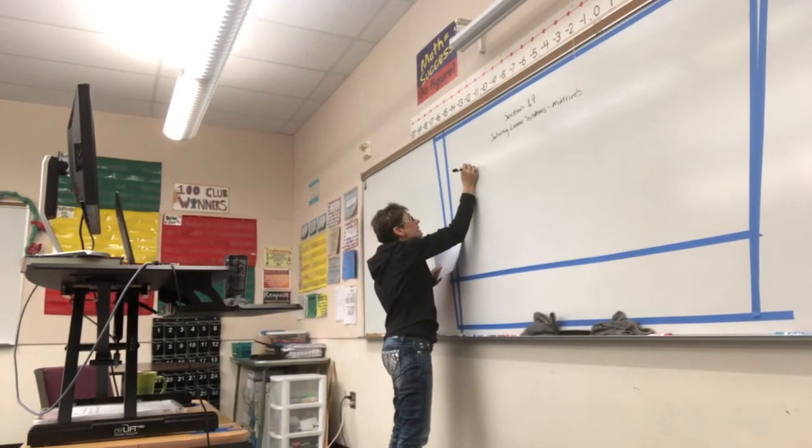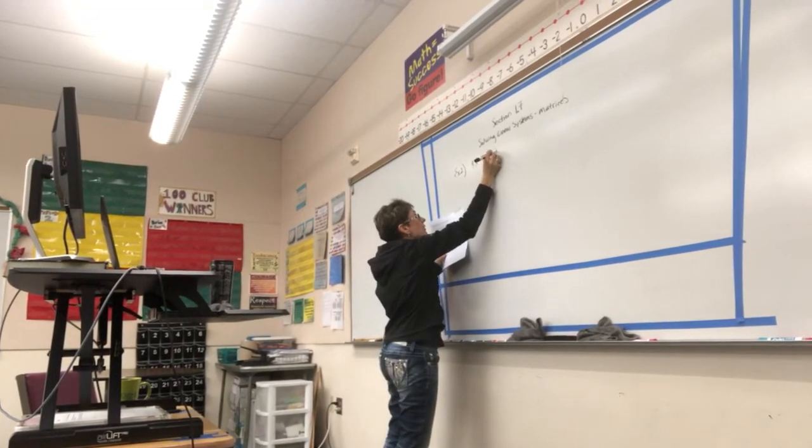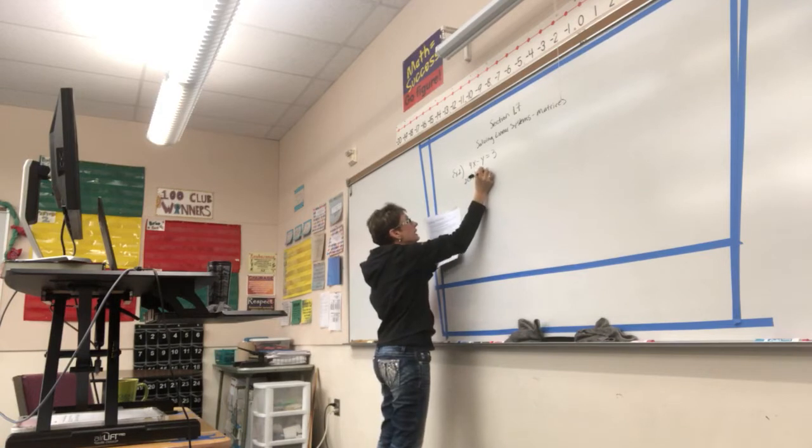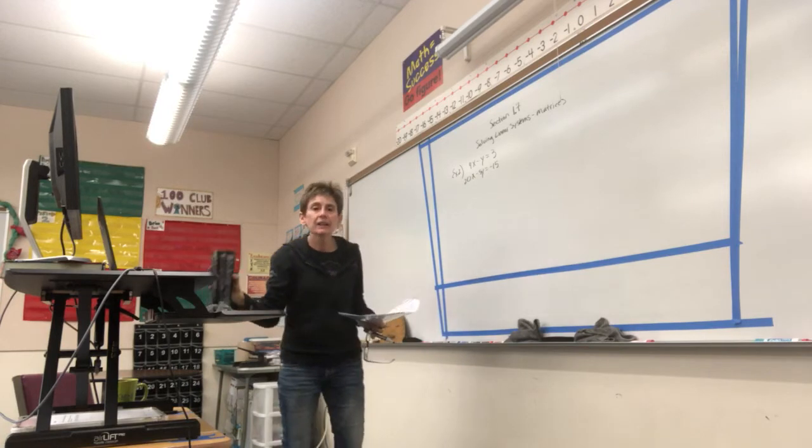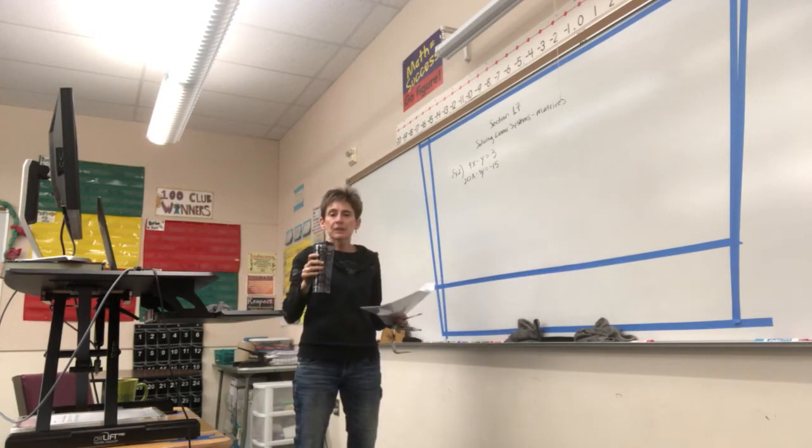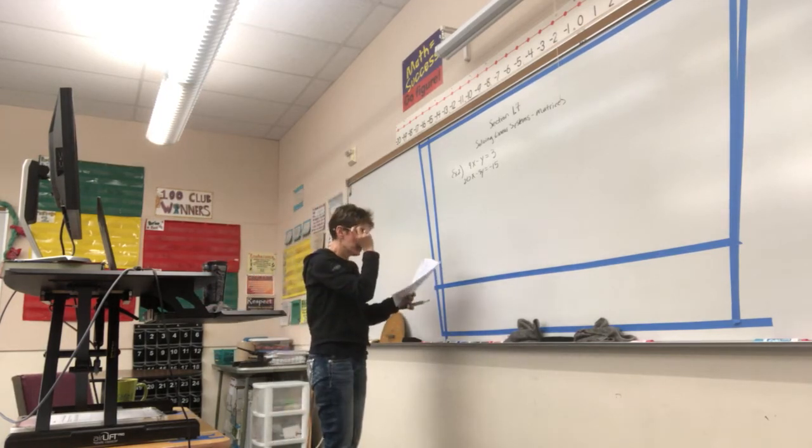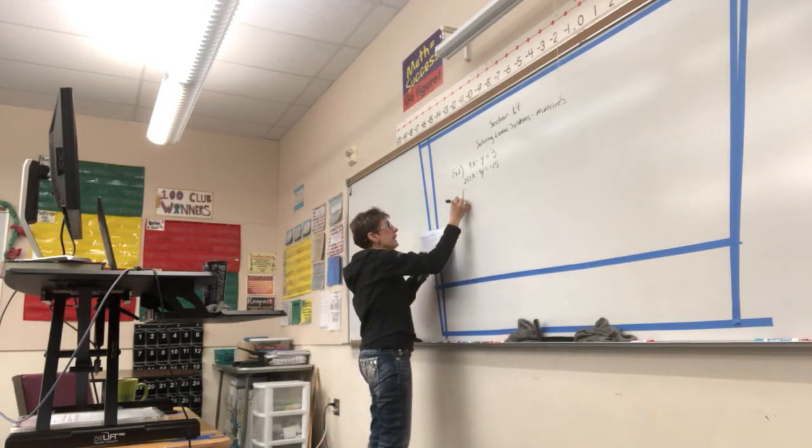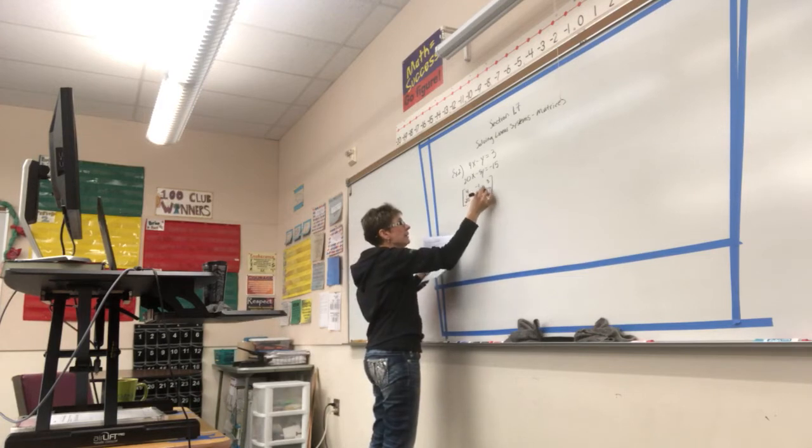For example two, I've got 4x minus y equals 3, and 20x minus 5y equals negative 15. The first thing I needed to do was to put this in augmented matrix form. So, I'm going to write this as 4, negative 1, and then 3, and 20, negative 5, and negative 15.